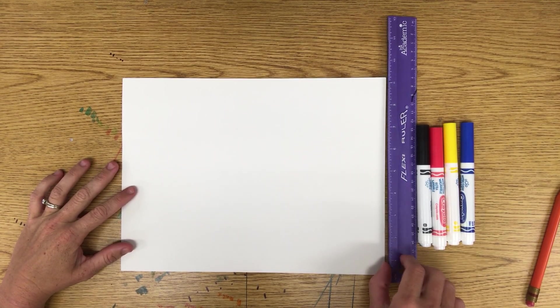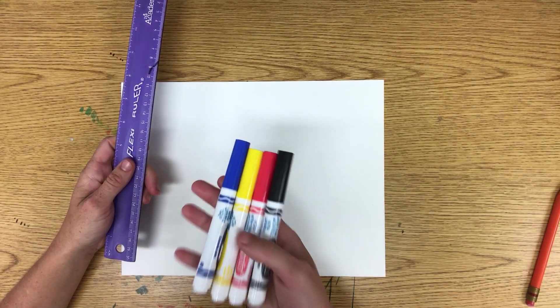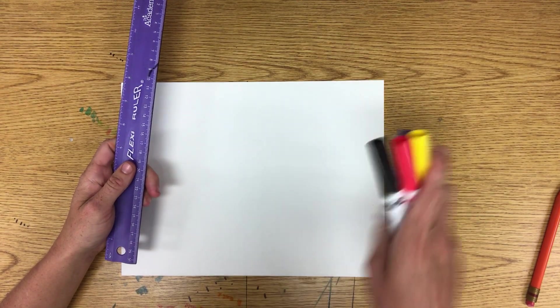Now, like I said, materials needed. You need paper, a ruler, your markers. We're focusing on primary colors, so you just need your primaries and a black, okay?